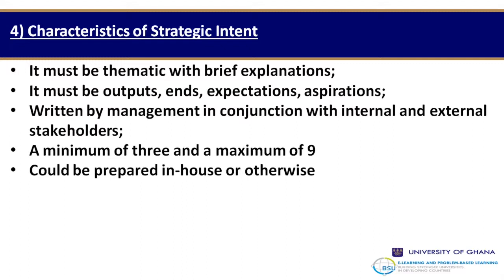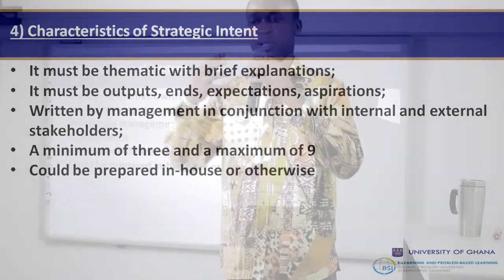Number one: strategic intent and priorities must be in thematic forms with brief explanations — just in the form of a phrase or simple sentences, as the main intent driving the organization. Number two: if you are designing intent or strategic priorities, they have to be in the form of an end, as opposed to a means to an end, because this is the output the firm intends to achieve going forward — it has to be an end product.